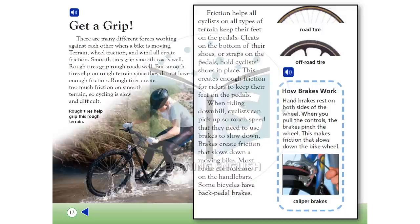When riding downhill, cyclists can pick up so much speed that they need to use brakes to slow down. Brakes create friction that slows down a moving bike. Most brake controls are on the handlebars. Some bicycles have backpedal brakes.